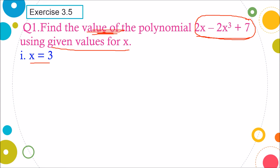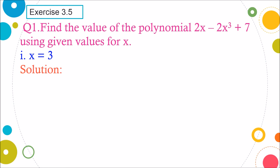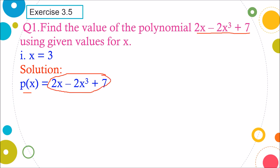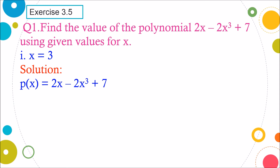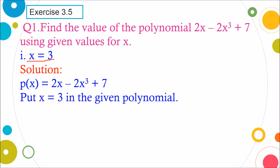To get the value of this polynomial, the value of x is given as 3. That means we have to find the value of this polynomial when x is 3. I have taken this polynomial as p(x). p stands for polynomial and this polynomial contains variable x. To get the value, we are going to substitute x as 3 — so at the place of x, we write 3. You can see that I have replaced the letter x by its value 3.